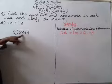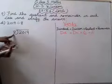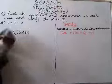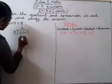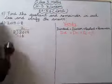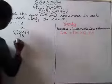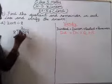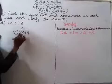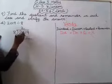24 toh 20 se zyada ho jayega, woh nahi le sakti hai. So 8 twos are 16. Now, here what we have to do — you have to subtract.